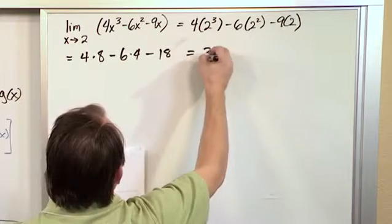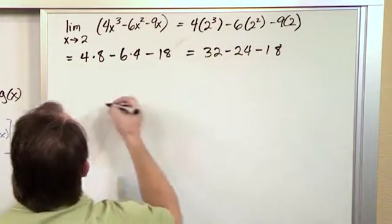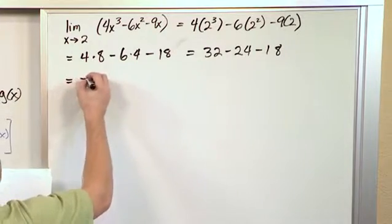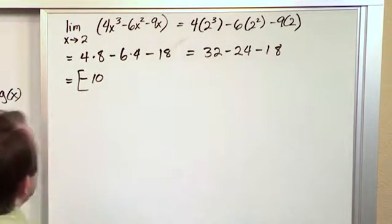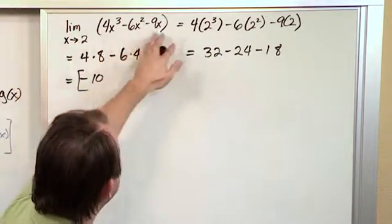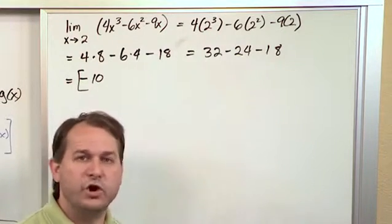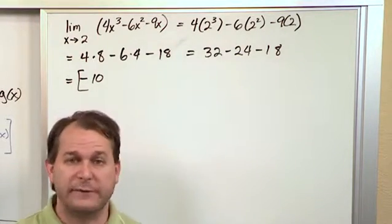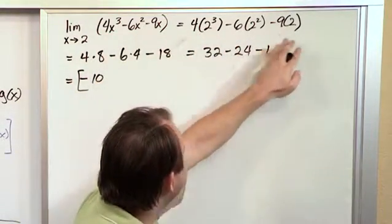Okay so what I'm going to have is thirty two minus twenty four minus eighteen and ultimately the final answer here is going to be negative ten. If you actually do this minus this minus this you get negative ten. So the point is by plugging it in the way I told you before this is a smooth continuous function. By the way all polynomials are smooth and continuous so you can always plug in the value to get the limit for any polynomial. What's happening is you're doing the limit for each individual thing here. Okay so let's move on to another problem.